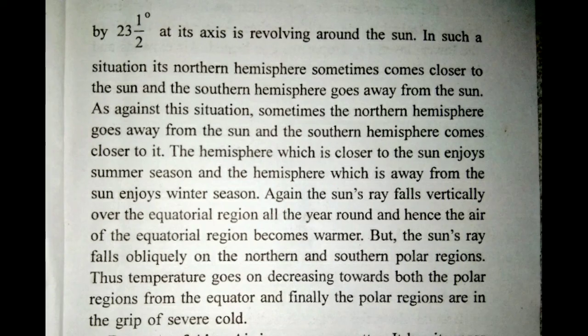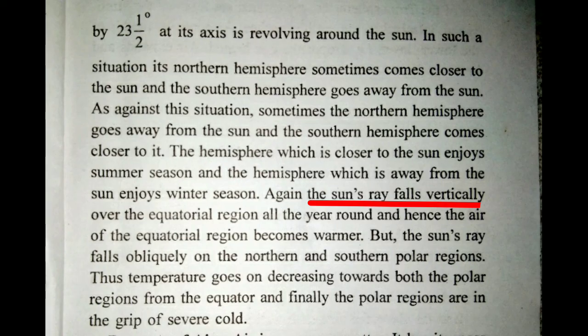The sun's rays fall vertically over the equatorial region all year round, so the equatorial region becomes warmer. But the sun's rays fall obliquely on the northern and southern polar regions. Thus, temperature goes on decreasing towards both the polar regions from the equator, and finally the polar regions are in the grip of severe cold.